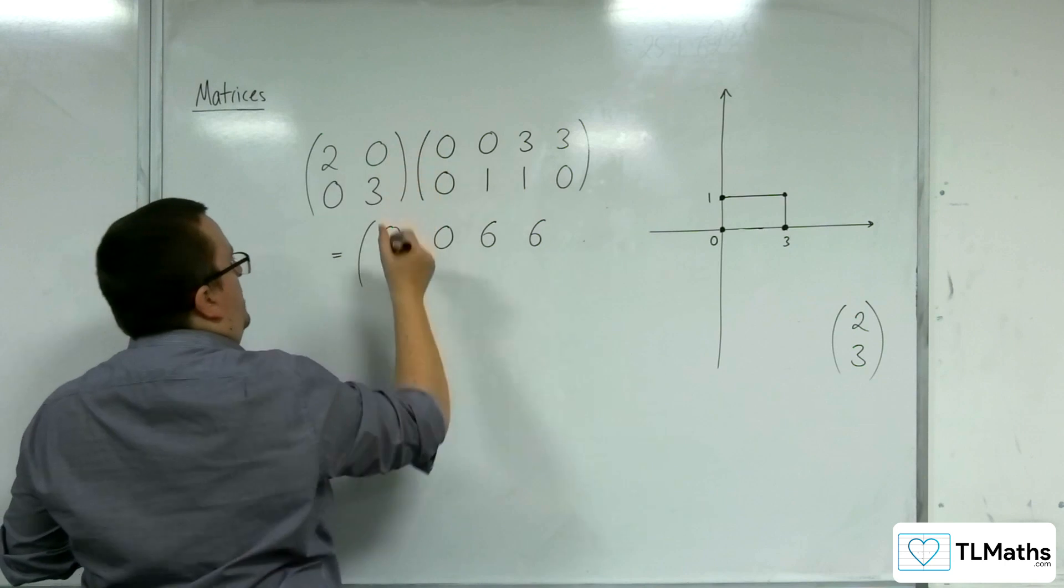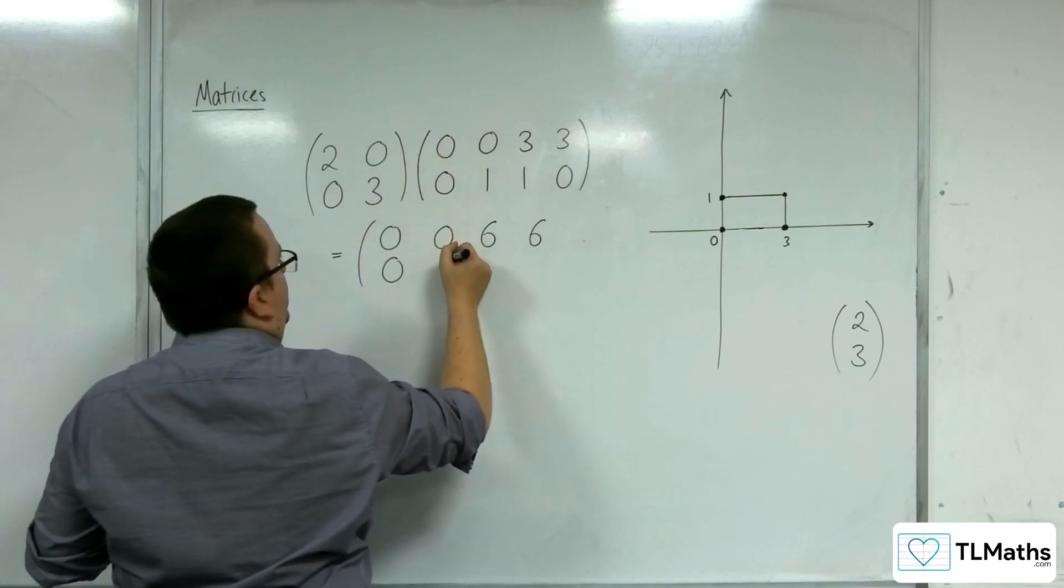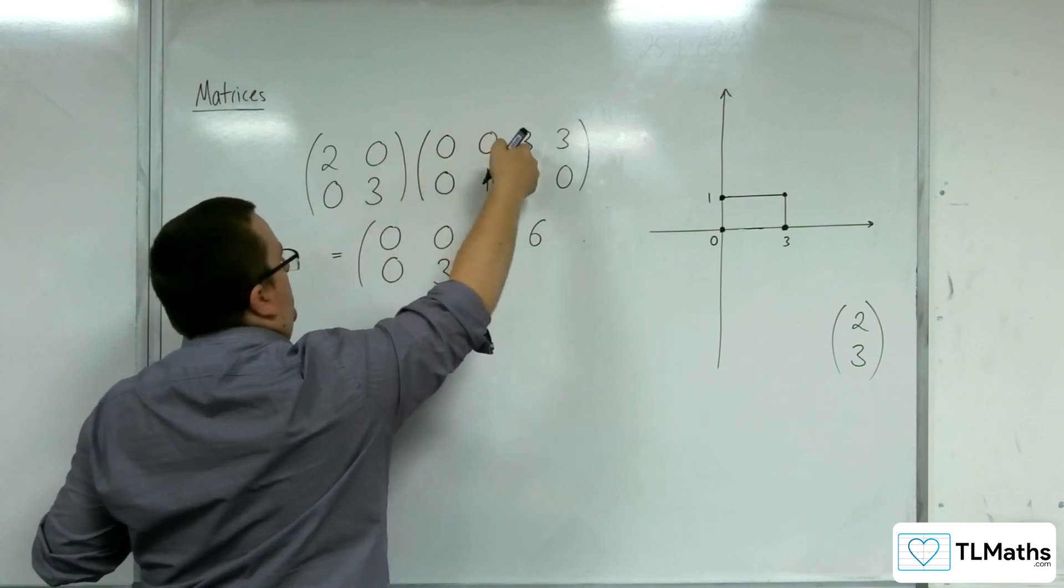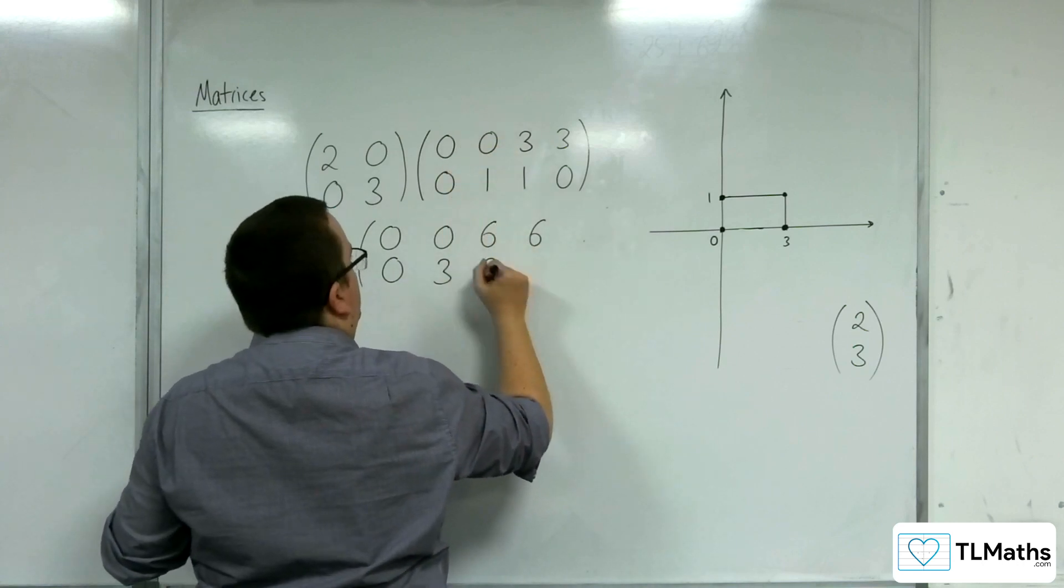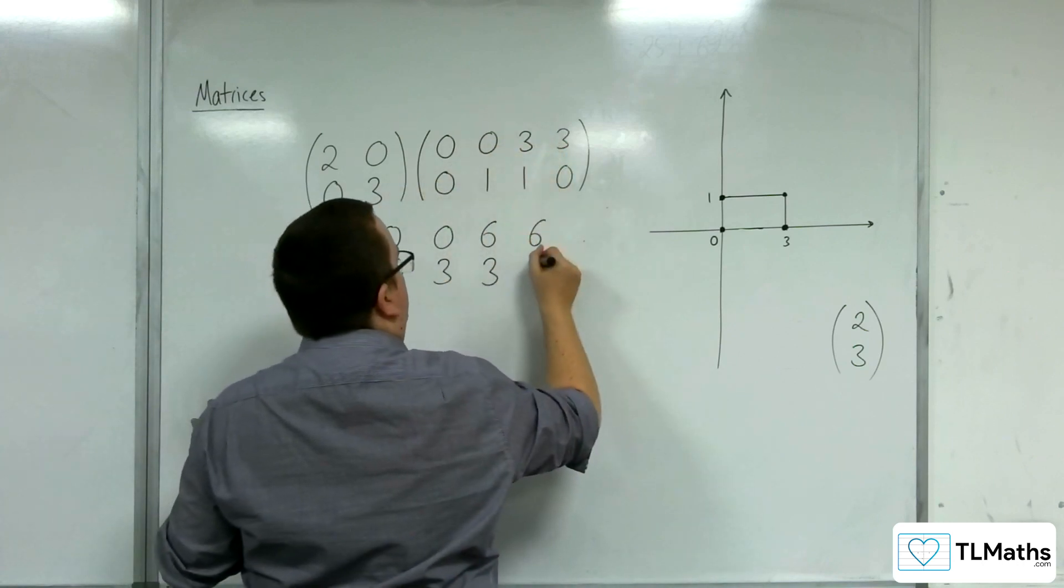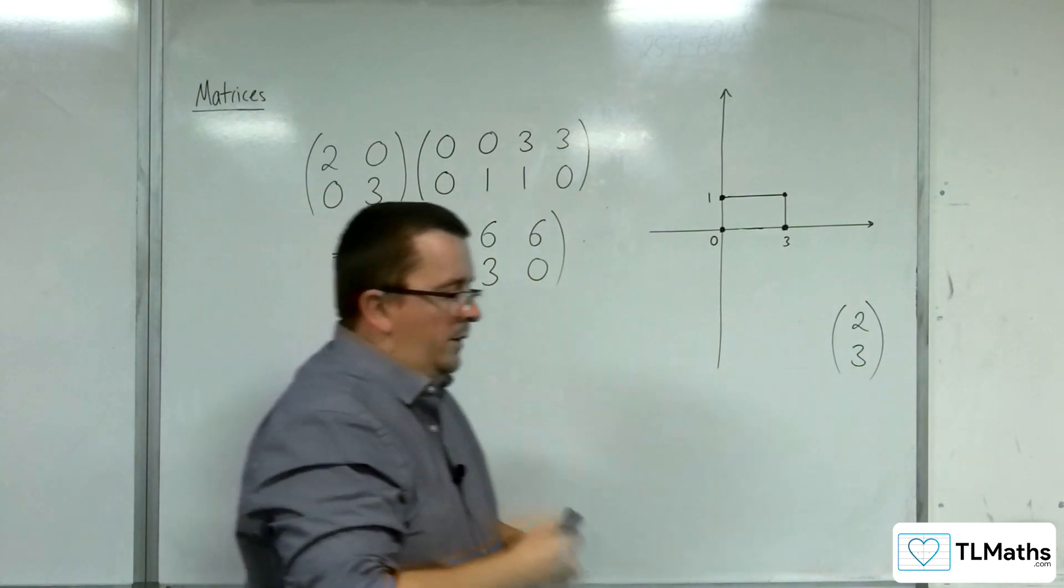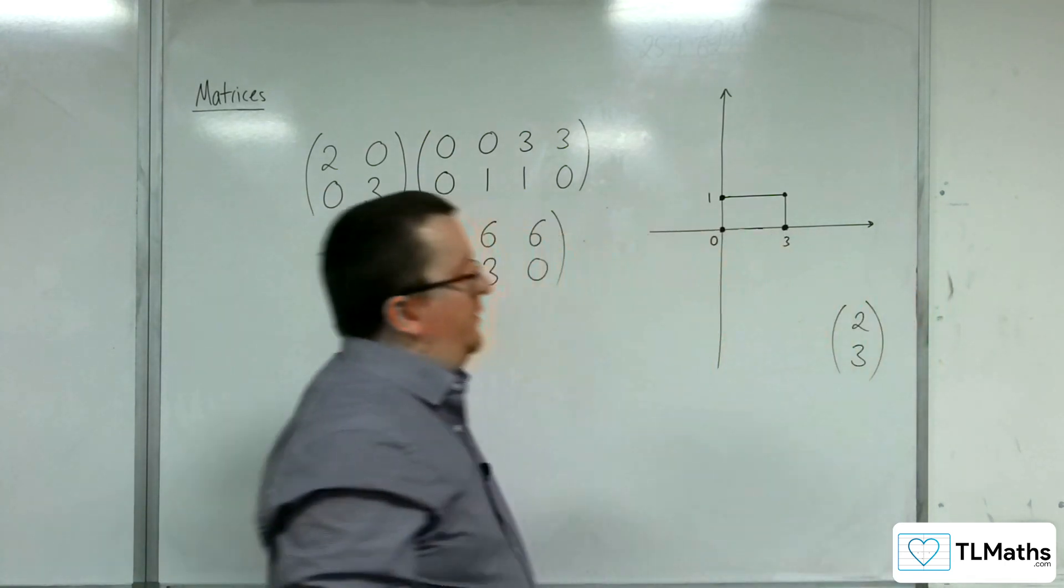0, 3 times 0, 0, that's 0. 0, 3 times 0, 1, that's 3. 0, 3 times 3, 1, that's 3. And 0, 3 times 3, 0, that's 0.